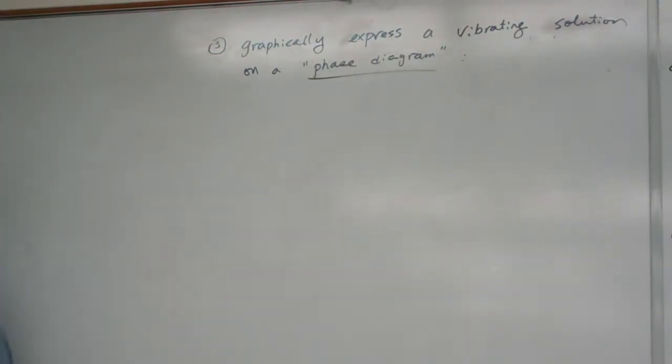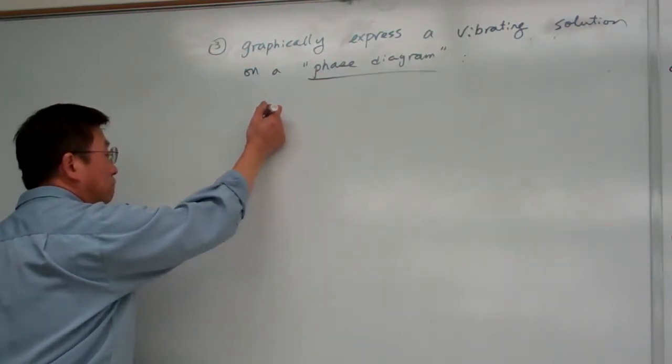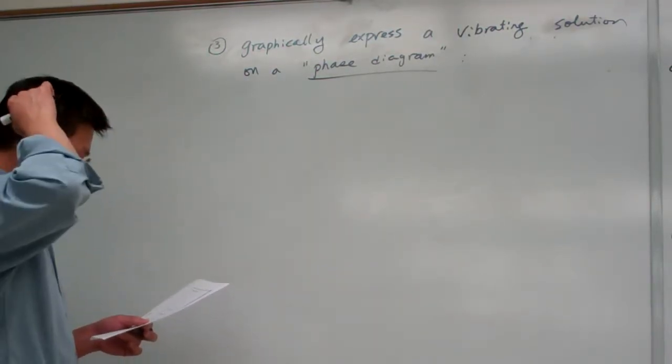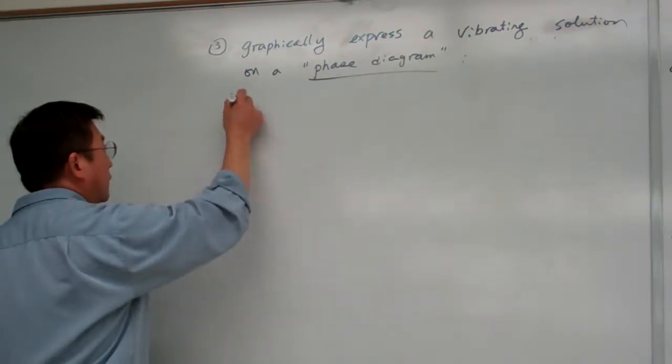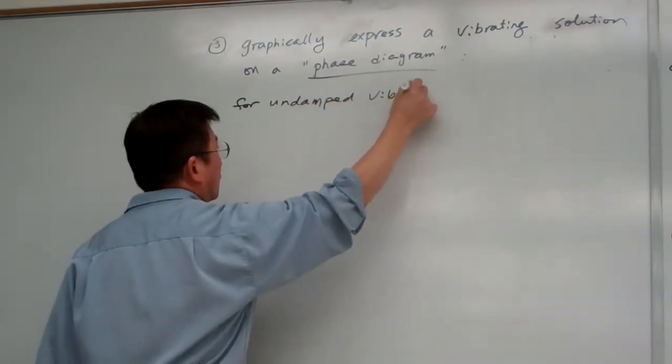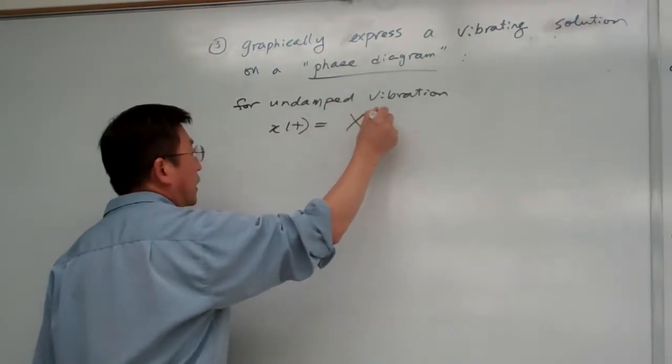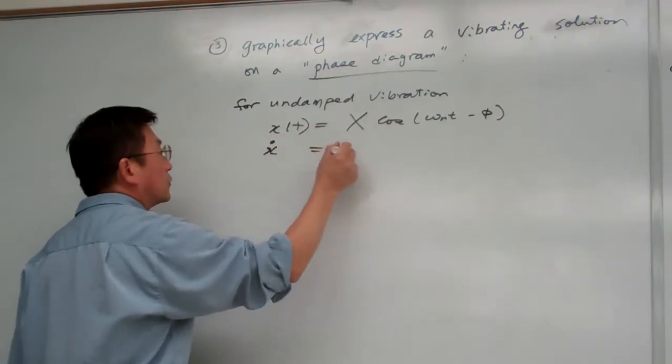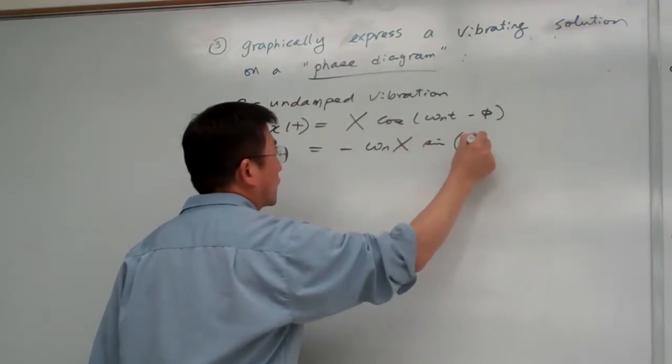Okay, so here I'm going to introduce what is a phase diagram. And we can look at here. Again, for the undamped vibrations. And we know the vibrations have this template: x cosine omega n t minus phi, and velocity is equal to minus omega n capital X sine omega n t minus phi.